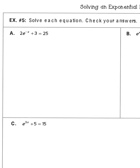Now let's look at example 5, part a — solving each equation. Remember, you have to check your answer by plugging it back into the argument of the log to make sure that argument does not become negative or zero.